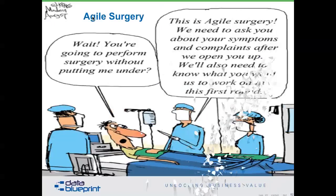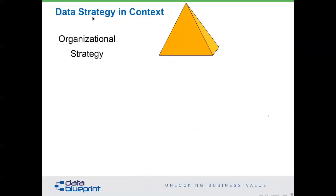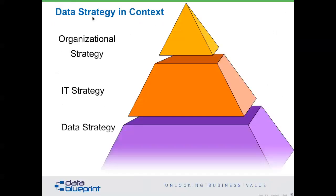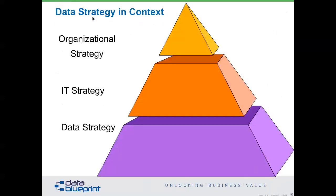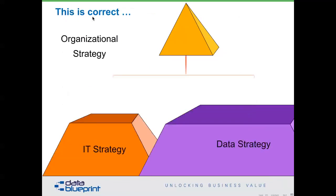Most people have the strategy part of this incorrect. There's an organizational strategy, a data strategy, and an IT strategy, but they do not work in the way they are typically presented — this is simply wrong. The right way is that these need to be co-developed and there needs to be coordination between the two. Because data has these slower-moving aspects, data actually needs to govern some aspects of what IT does in terms of timing and sequences.